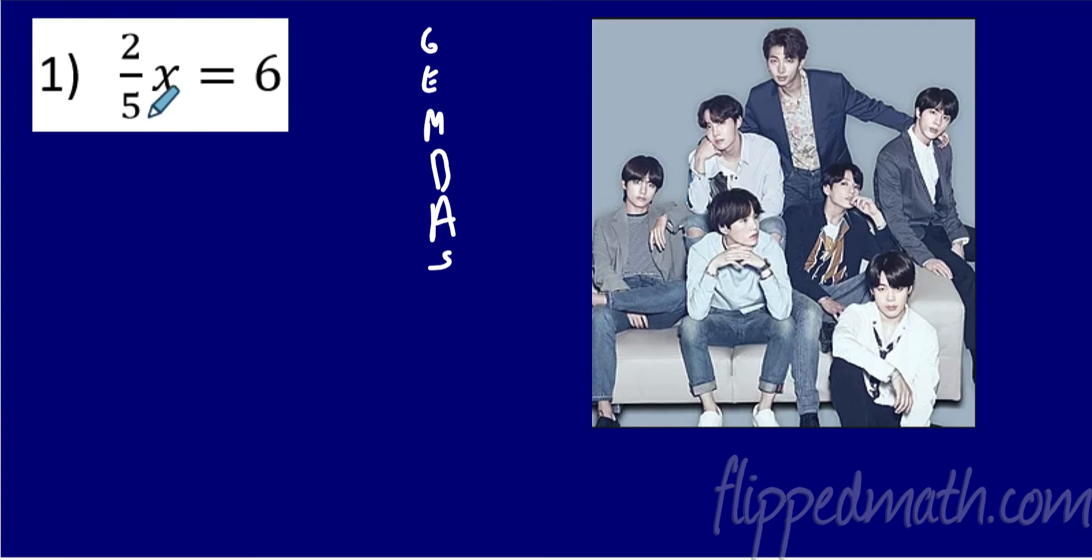Now, I know that this says 2 fifths. 2 fifths is just a number, 2 fifths times x. So it appears to me that I'm just doing one thing, I'm multiplying. But I really want you to think of this as two separate things. I want you to think of it as 2 times x and divide by 5. So I really want you to think I have division and I have multiplication.